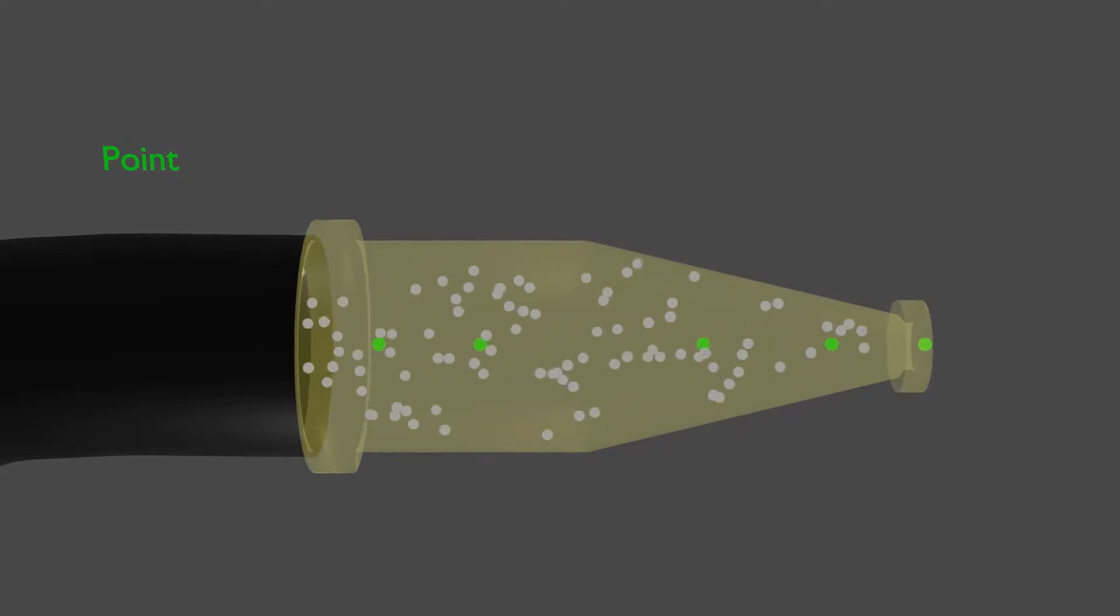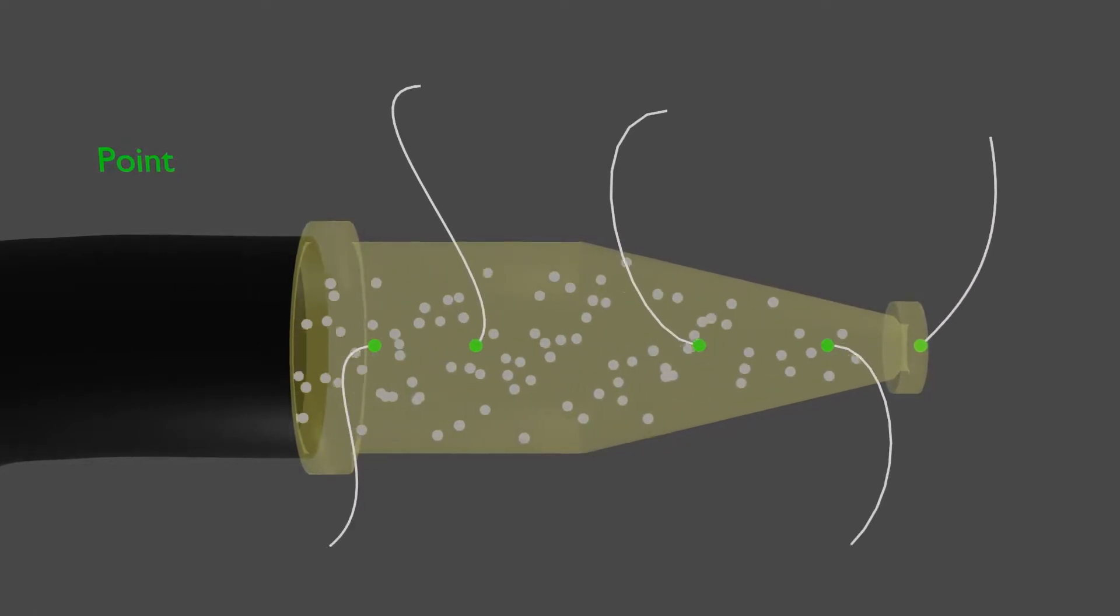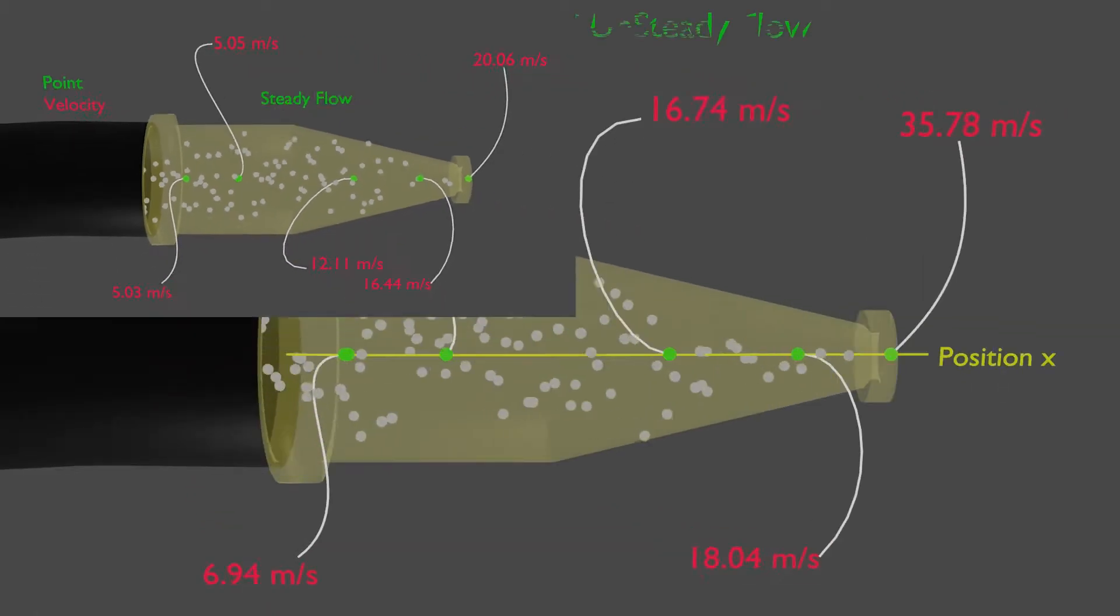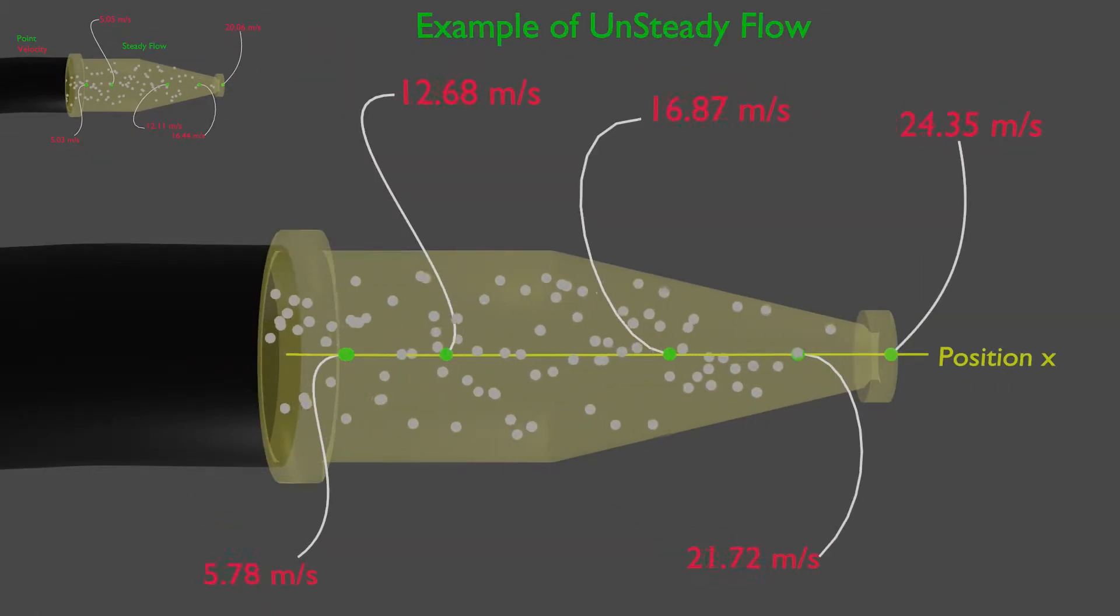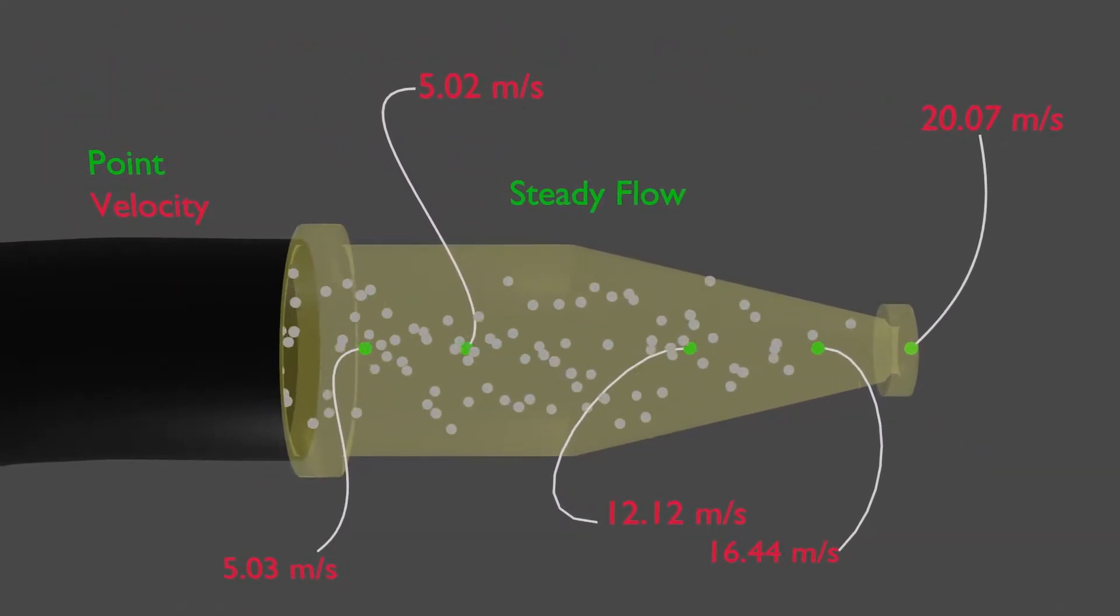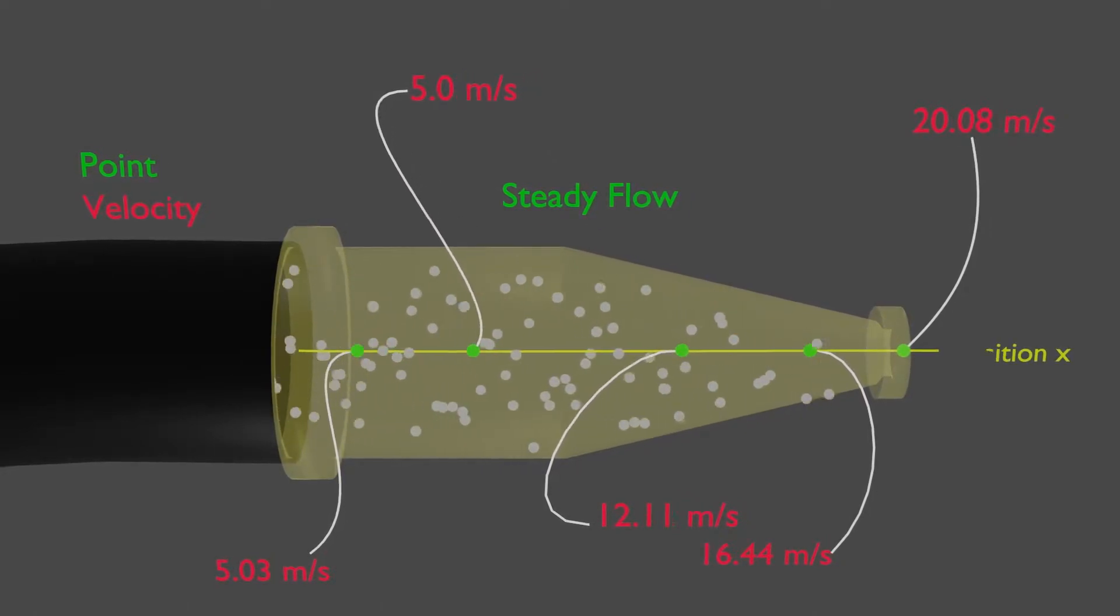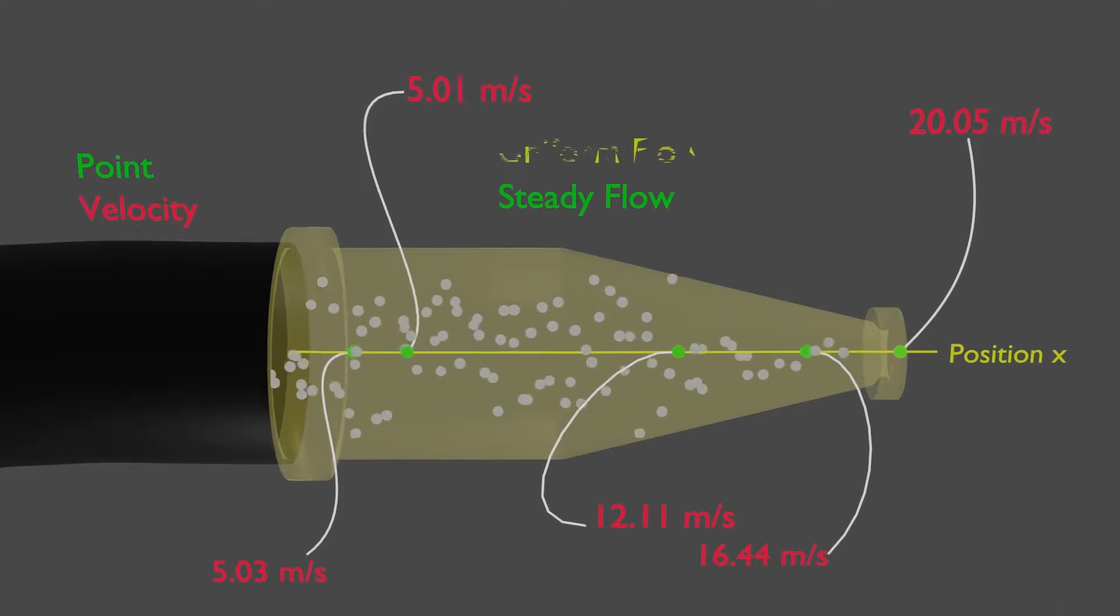When the velocity of a fluid at a point does not change with time, we refer to the flow as steady flow. And when the velocity does not change from one position to the next, it is referred to as uniform flow.